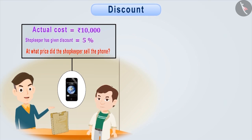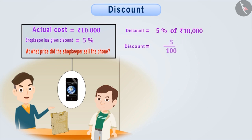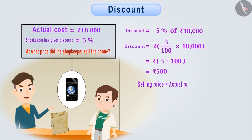In this situation, first, we will calculate the discount. Since the shopkeeper has given a 5% discount on the actual price, we can say that discount is equal to 5% of Rs. 10,000. That means, 5 by 100 into 10,000, which is equal to 5 into 100, which is equal to Rs. 500. Therefore, selling price is equal to actual cost minus discount, which is equal to Rs. 10,000 minus Rs. 500, which is equal to Rs. 9,500.